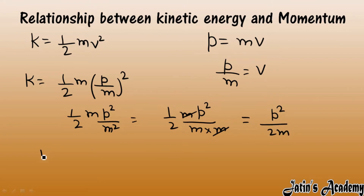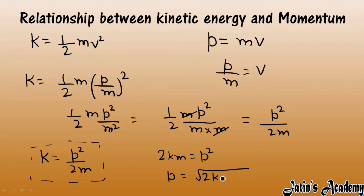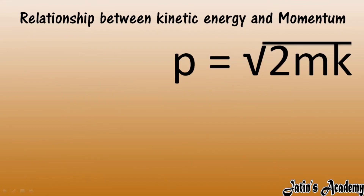Kinetic energy we got as P squared by 2m. Multiplying 2m to the other side gives us another expression. Here we have P squared, so P becomes the square root on the other side, giving us under root 2Km. So this is the expression of momentum in terms of kinetic energy. This is the exact relationship between kinetic energy and momentum, which is very important from the numerical point of view. This is the expression of momentum with mass and kinetic energy.